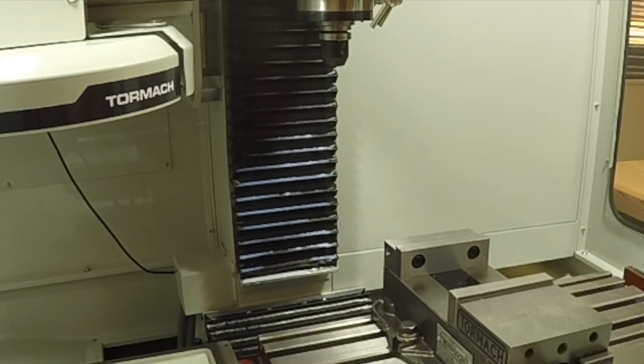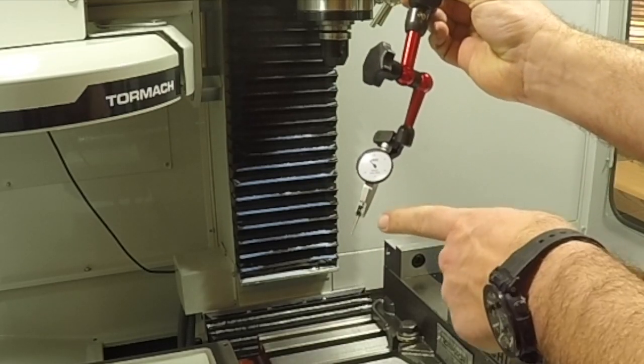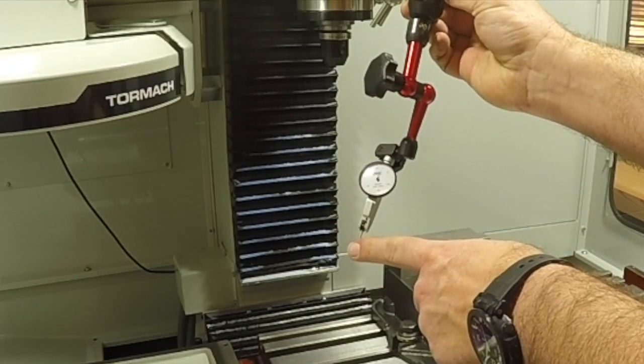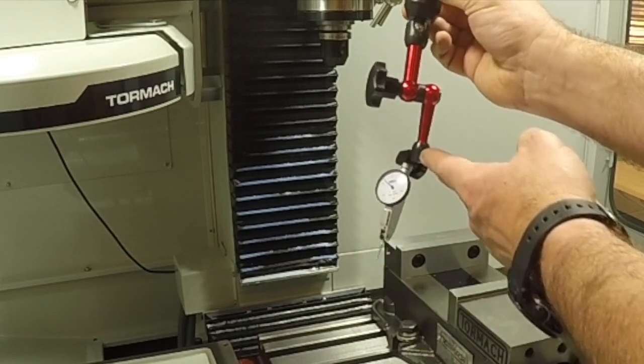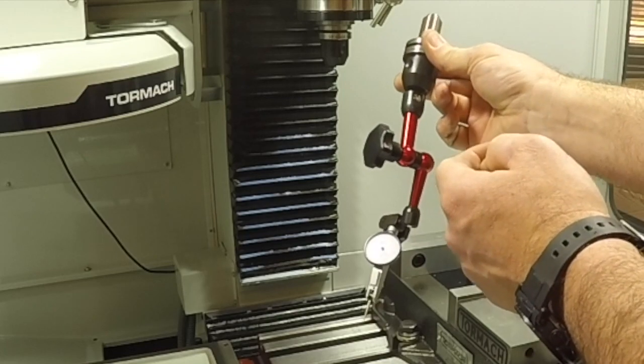And what I want to do now is I'm going to be installing a dial - not a dial indicator, a test indicator. This is a test indicator. It has this little touch probe on the very end. You can see that needle move when I just barely touch it. It has this arm that goes into a collet holder.